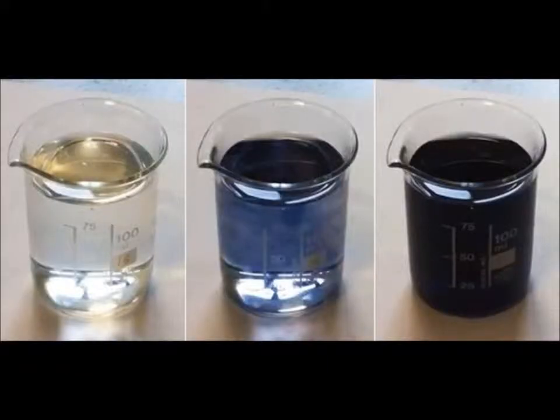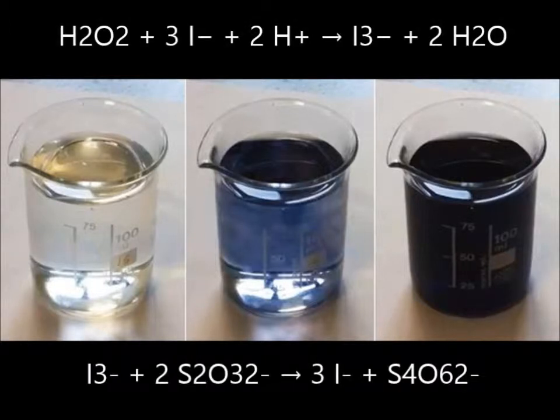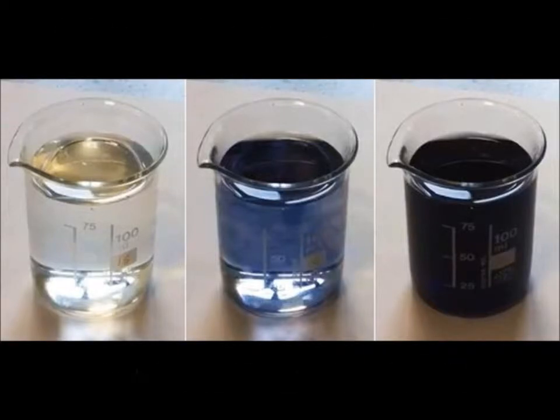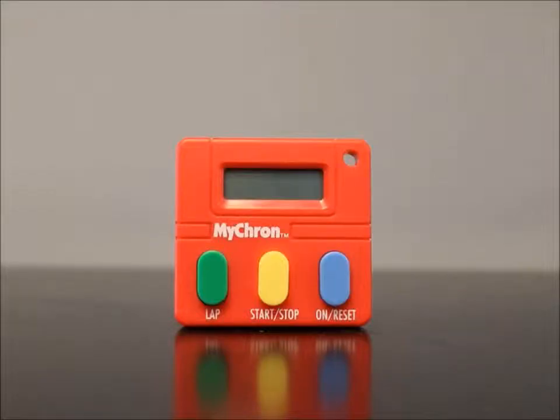The iodine clock experiment involves a delayed reaction between potassium iodate and sodium metabisulfate. For this, we will need the two reactants, a timer,